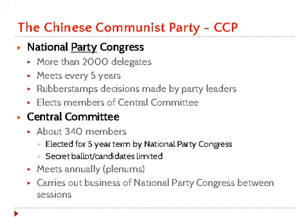The party is everything. There is a National Party Congress that has 2,000 delegates and meets every five years — it just rubber stamps decisions made by the Central Committee. That body also elects the Central Committee, which is one step higher on the food chain. The Central Committee is about 340 members, elected for a five-year term by the 2,000 members of the National Party Congress.